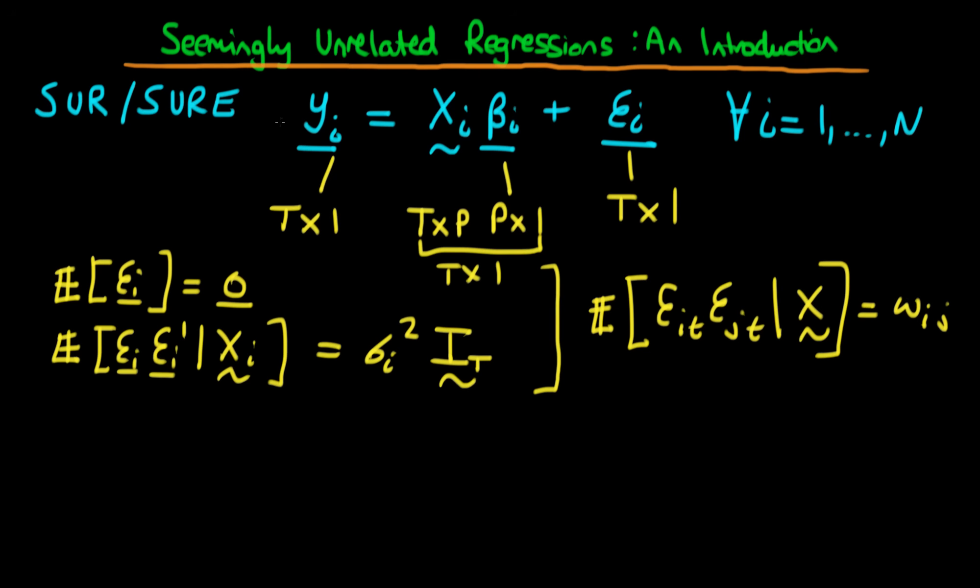So remember that we've got this particular equation up here that we're holding for each of the different individuals. What we'd quite like is we'd quite like a way of representing this particular equation up here, but in a more compact form. So what we can do, actually, is we can just stack each of the dependent variables on top of one another.